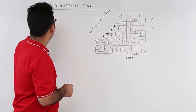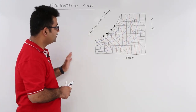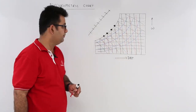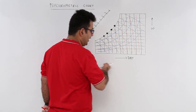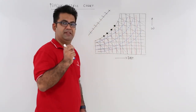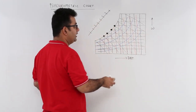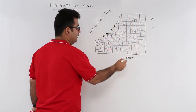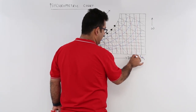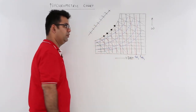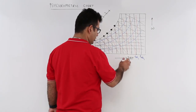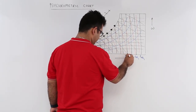In this video we'll look at the concept of the psychrometric chart. This is how a psychrometric chart looks — it has lots of lines: vertical, horizontal, and slant. There are two main axes: the horizontal axis shows the dry bulb temperature and the vertical axis shows the specific humidity. These vertical lines in black show the dry bulb temperature, so this is TDB1 and this is TDB2.